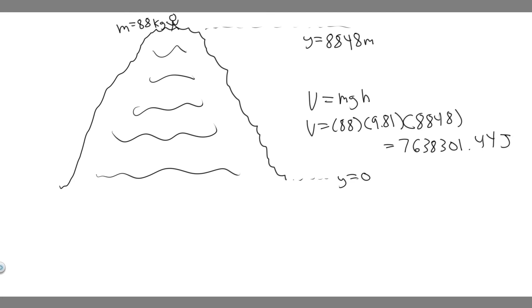And then what you want to do is you can either leave it like this or just round. So this would be 1, 2, 3, 4, 5, 6. So this is just equal to 7.6 times 10 to the 6 joules, which just equals 7.6 mega joules.